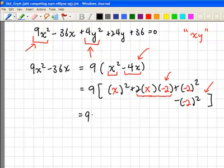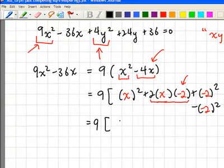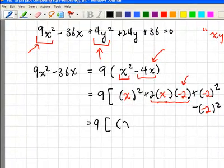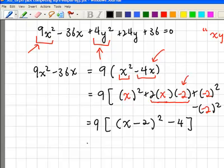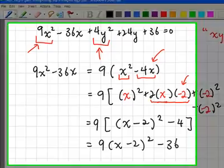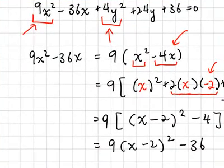The completed square form is x minus 2 squared. In the end, for the x variable part you will have 9 times (x minus 2) squared minus 36. Now for the y variable part, we do the same.